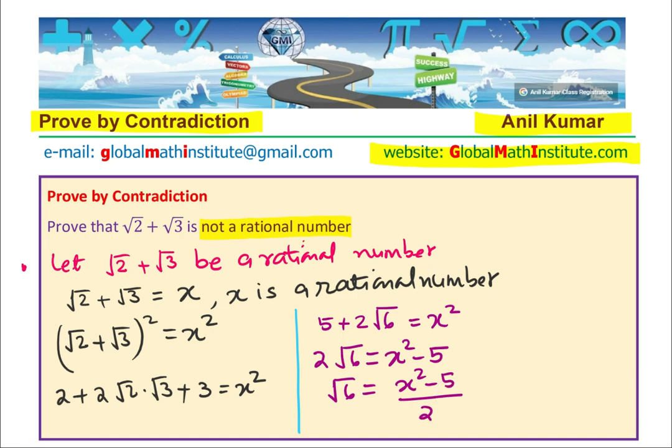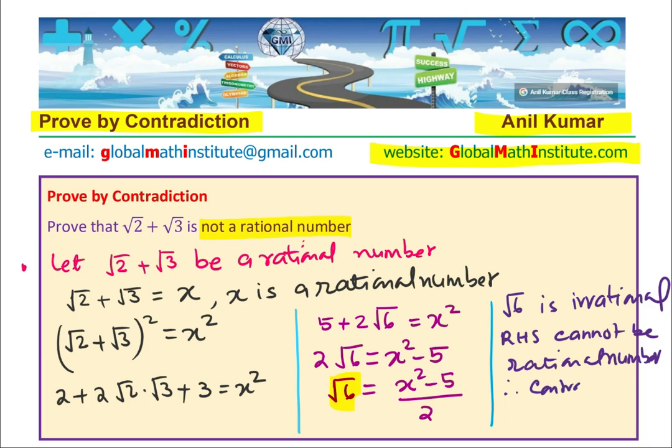Now in this statement, you know one thing that square root 6 is irrational right? And now, if you are saying that the right-hand side is rational, we have contradicted. Square root 6 is irrational. So that means that the right-hand side cannot be rational. So see how we have contradicted the statement. Therefore, from contradiction, we can show that square root of 2 plus square root of 3 is irrational.